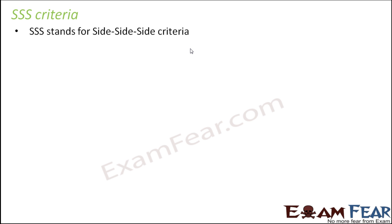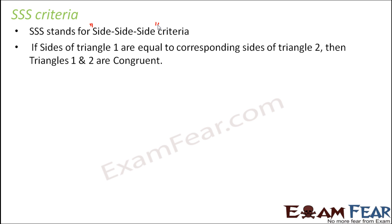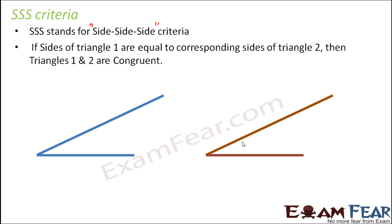What does side, side, side mean? It means that if you have two triangles — say triangle one and triangle two — and all the sides of triangle one are equal to all the sides of triangle two. That doesn't mean all sides within one triangle are equal to each other; it means the corresponding sides are equal. Let us name the triangles: triangle ABC and triangle DEF.